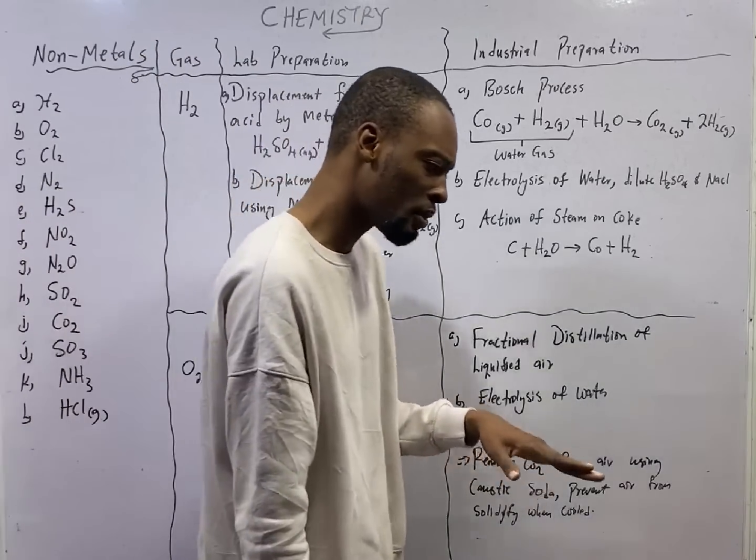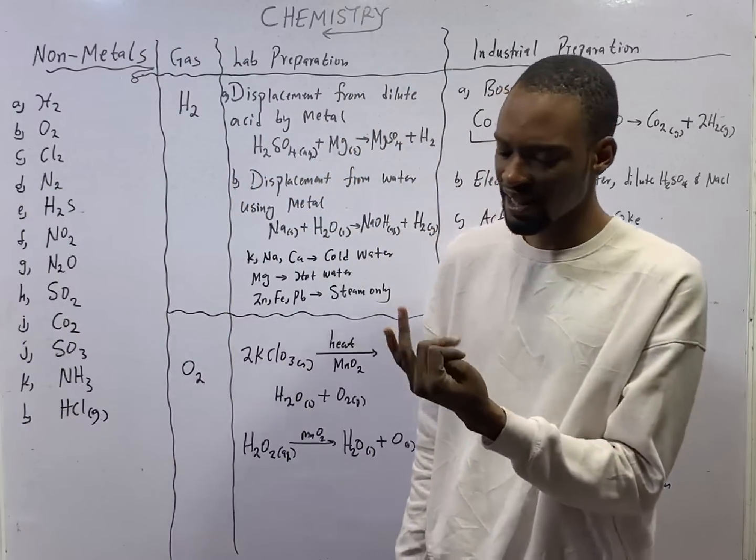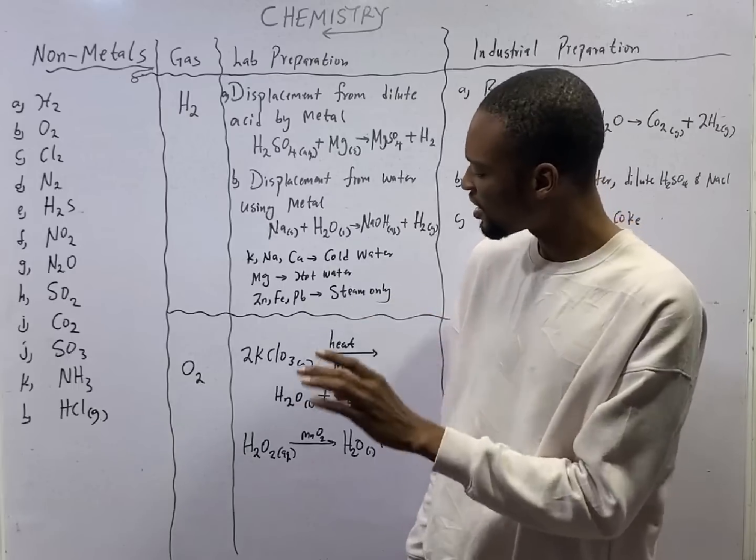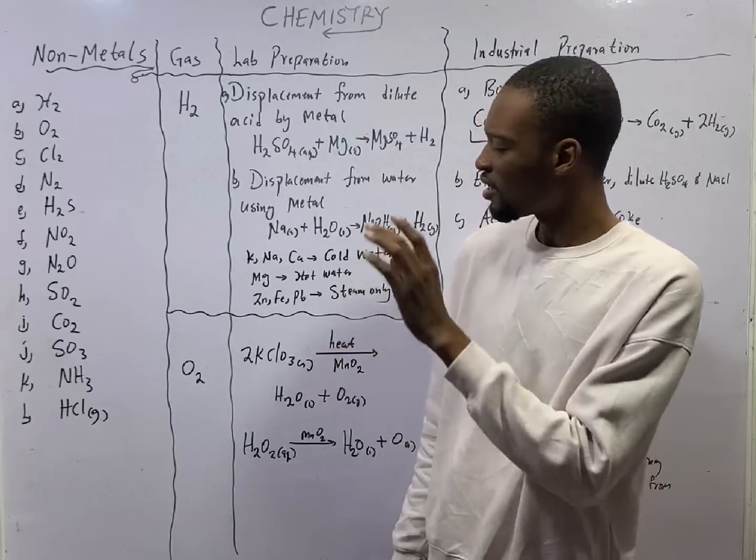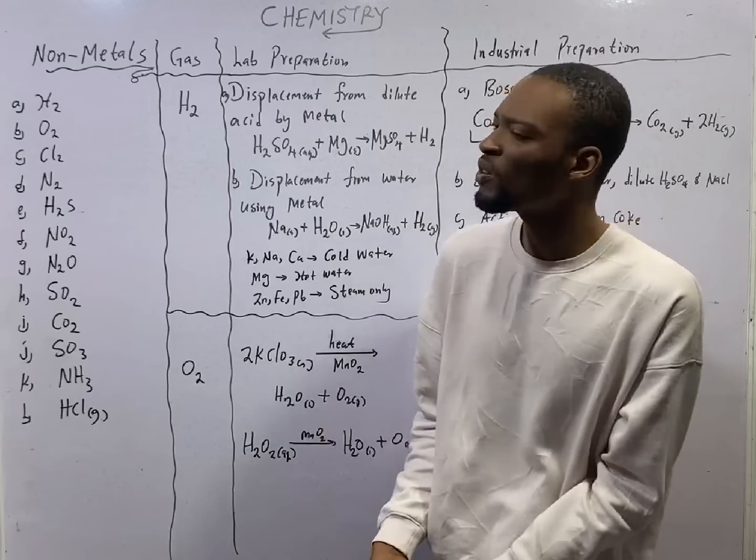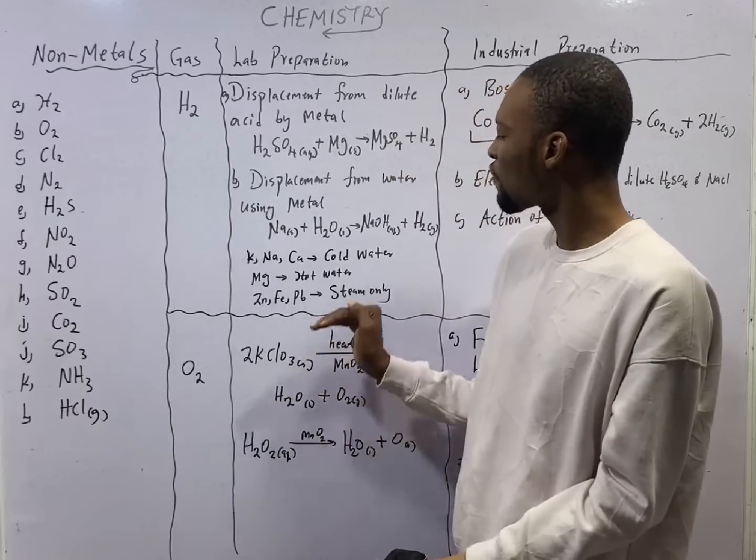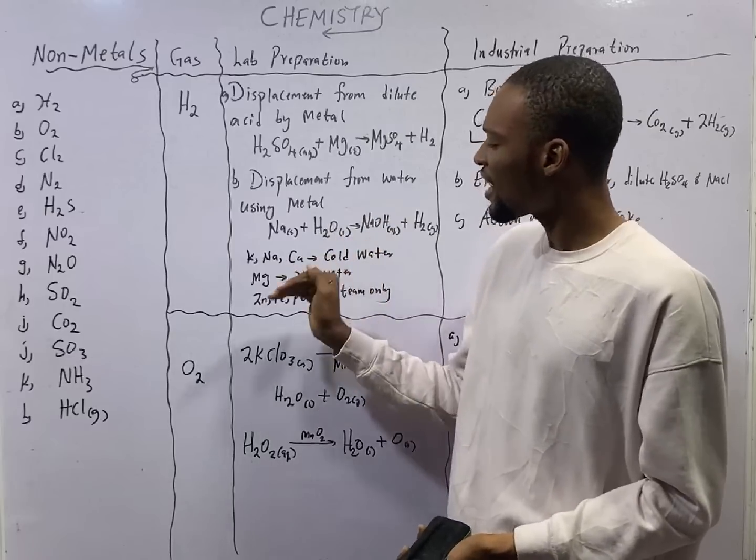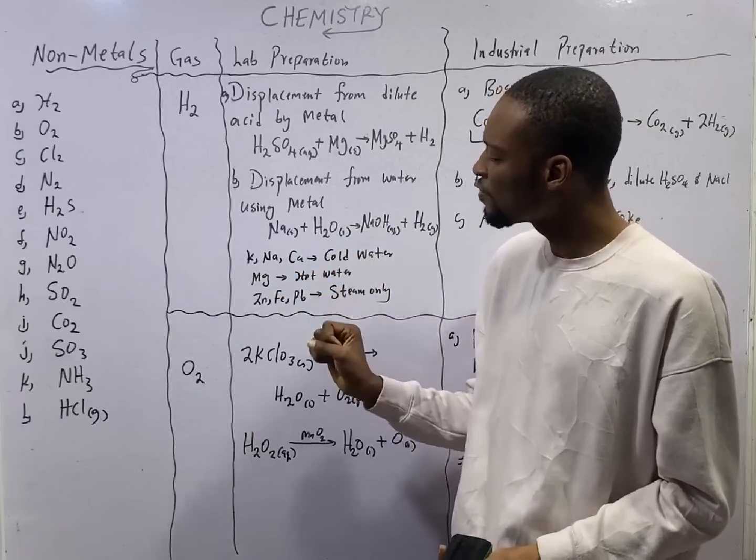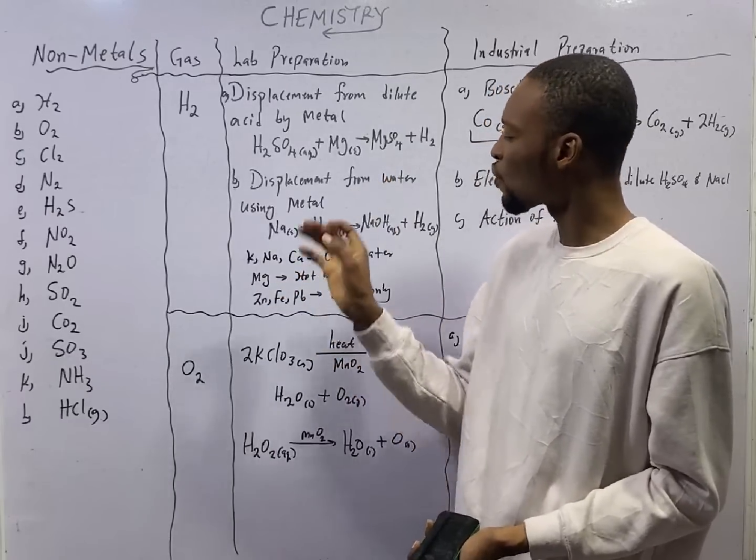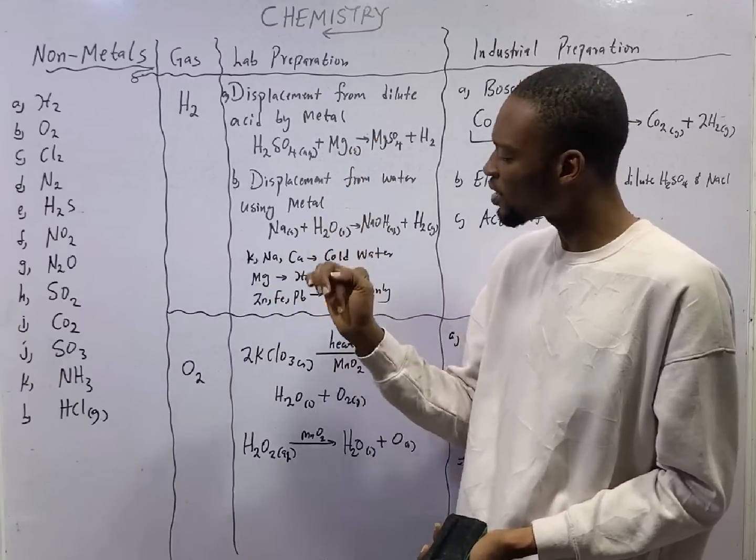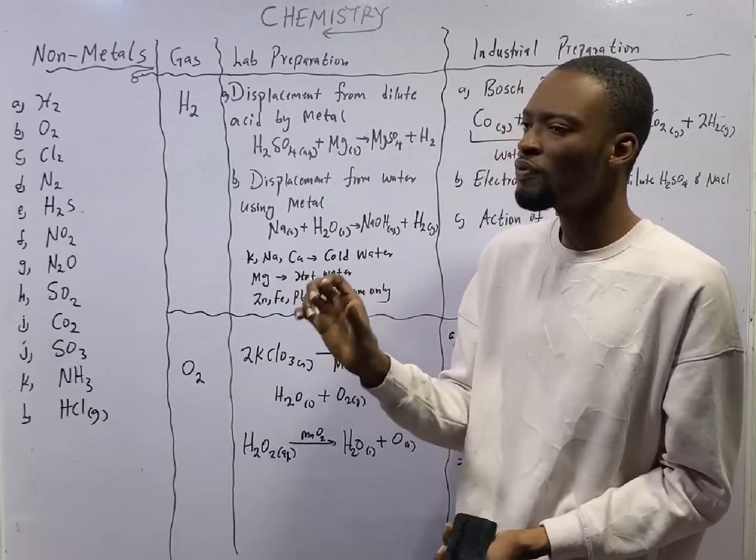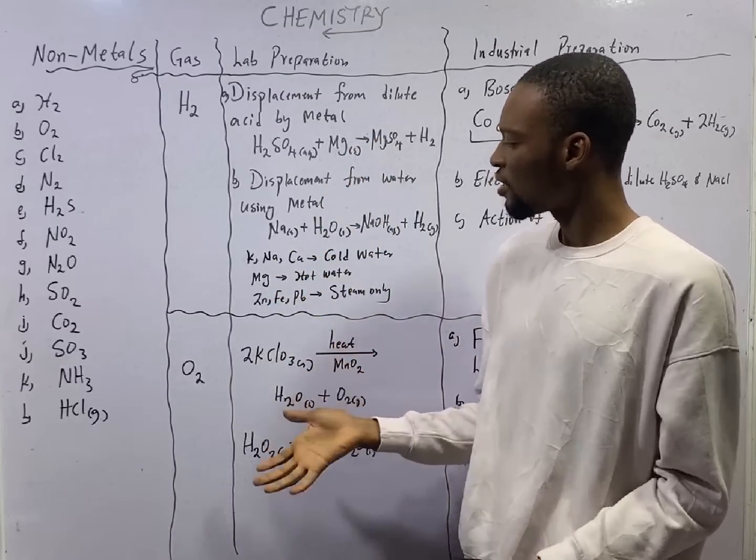Now, the ones that are lower than magnesium, zinc, iron, and lead can only remove hydrogen from steam, that is water gas. Zinc, iron, and lead cannot remove hydrogen from cold water, they cannot remove hydrogen from hot water, they can only remove hydrogen from steam.